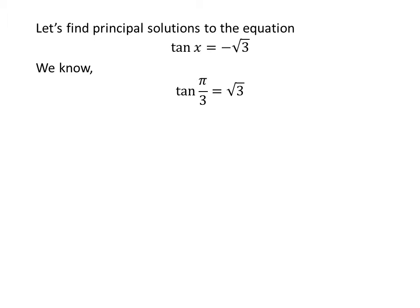We know the value of tangent of pi upon 3 is square root of 3. We also know the trigonometry identity tangent of pi minus a is equal to minus tangent of a.